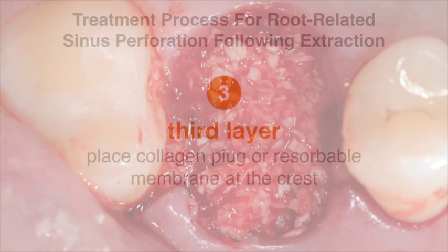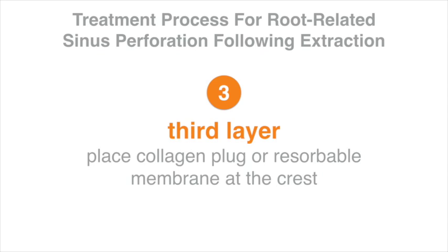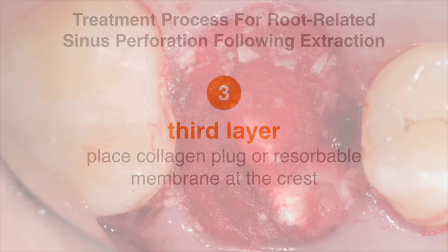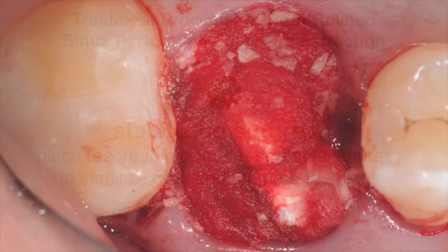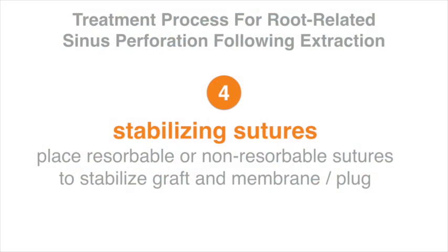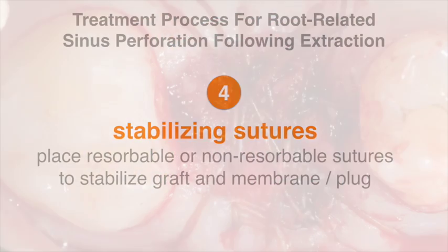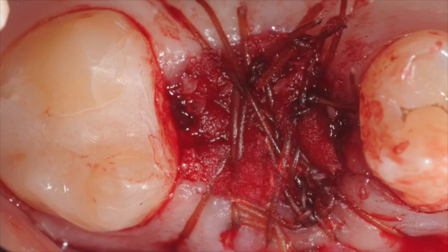Finally, the third layer is placement of another collagen plug or a resorbable membrane over the bone graft to keep it intact in the socket during the healing phase. Next, cross sutures are placed to stabilize the membrane over the graft and keep it stable in its position.